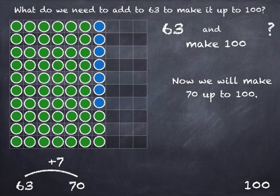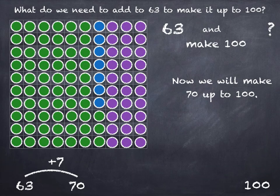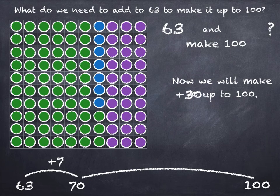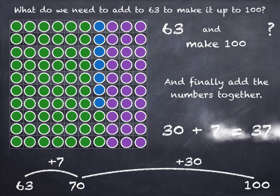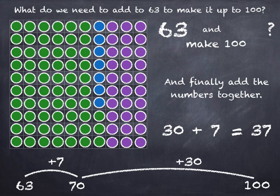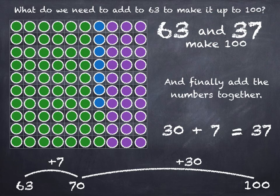And then we're going to go from 70 up to 100. So how many tens do we need? That's 3 tens, which is 30. 70 plus 30 takes us to 100. And what did we have to add on all together? We added on 30 and we added on 7, so that's 37. So 63 and 37 make 100.